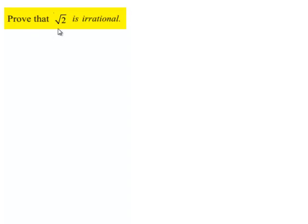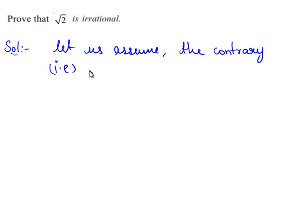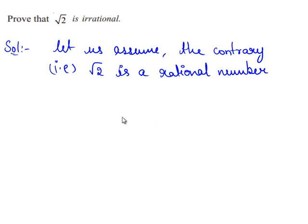Now we shall prove that root 2 is an irrational number. Let us assume the contrary — that root 2 is a rational number. Since we have assumed that root 2 is a rational number, root 2 can be written in the form of p upon q.